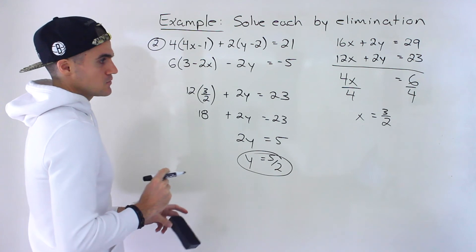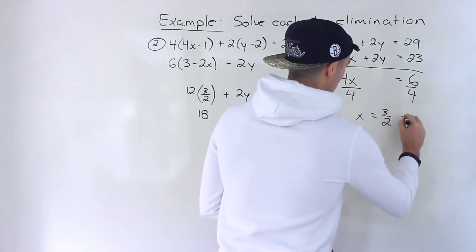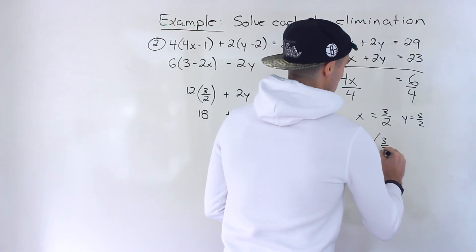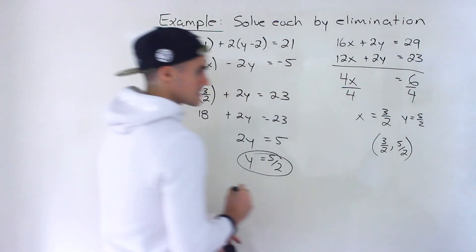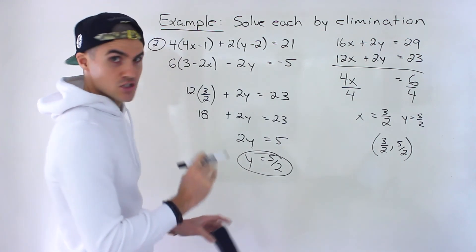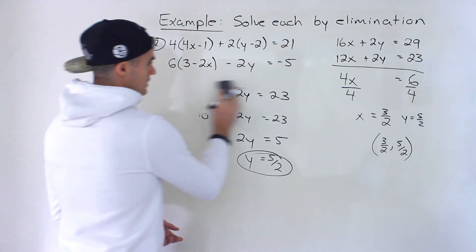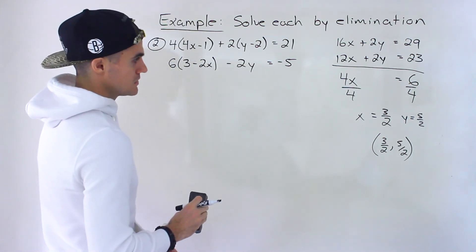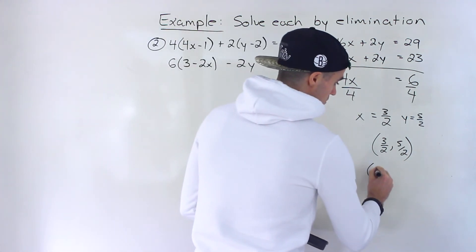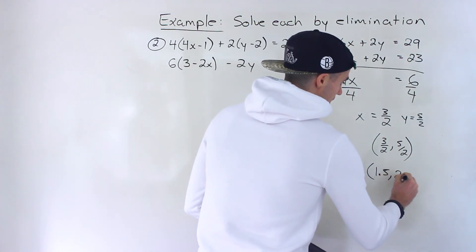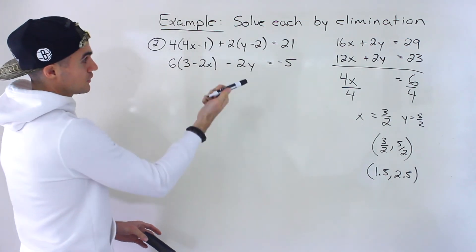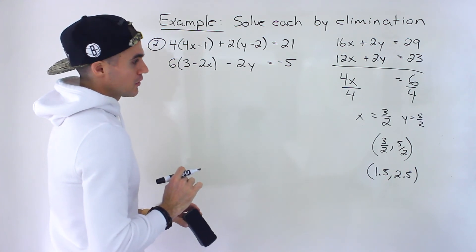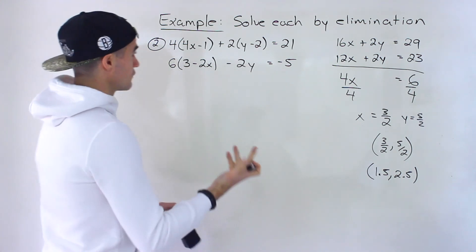So we got x equaling 3 over 2 and y equaling 5 over 2 — we got fractions. This is another format you might see this in — that's the point of intersection. So let's check these. The check is going to be kind of hectic here, but it shouldn't be too bad. Another thing you could do: you could convert these to decimals if your teacher allows it and just plug in decimals to check, which would be easier. But in case your teacher wants you to work with fractions, let's do the work with fractions.